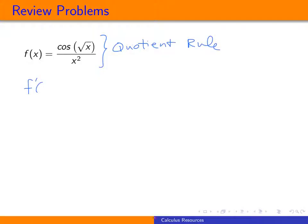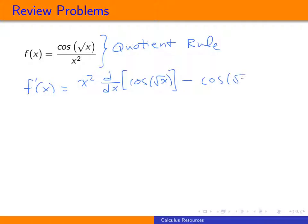For the quotient rule, f prime of x starts by writing the denominator, leaving it unchanged — that's x squared — then multiplying by the derivative of the numerator, which is d/dx of cosine of square root x. Then we subtract, leaving the numerator the same as cosine of square root x, multiplied by the derivative of the denominator, which is the derivative of x squared. All of that goes over the denominator squared.